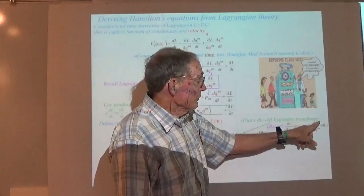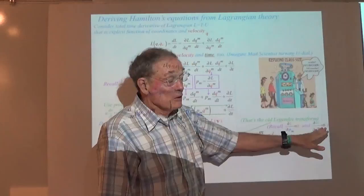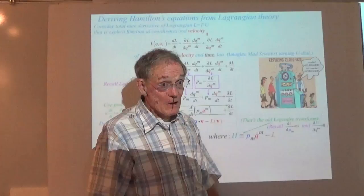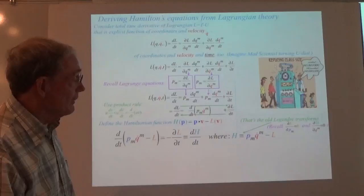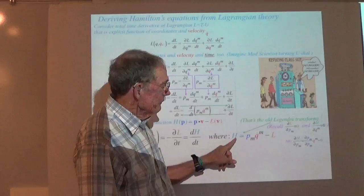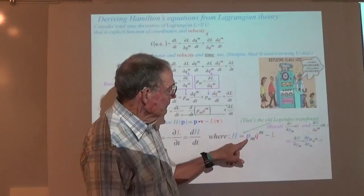That argument was an optimization argument — remember, we pushed secants out until they became tangent. That was the optimum value for that sloping line. So the partial derivative of H with respect to P gives you: the partial of P_M with respect to P_M is one. So this gives us the partial derivative of H with respect to P_M equals Q-dot. That is Hamilton's first equation.